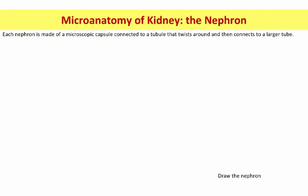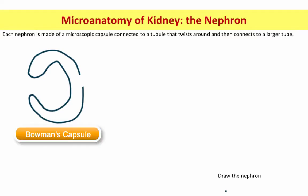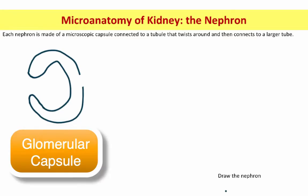We're going to start by just drawing the tubules of the nephron proper in a dark blue color. You're going to start by drawing sort of a backward, funky C, and then erase a tiny bit right there. I need for you guys to imagine that this structure is three-dimensional. It's a cup-like structure, and this is called Bowman's capsule.